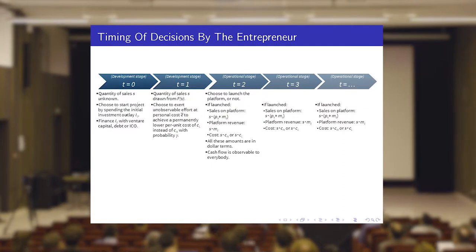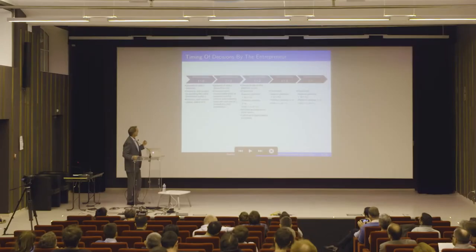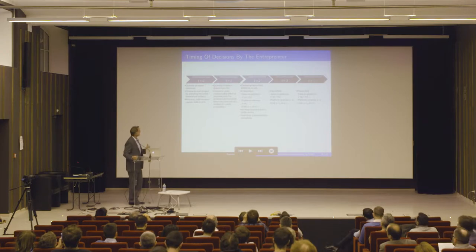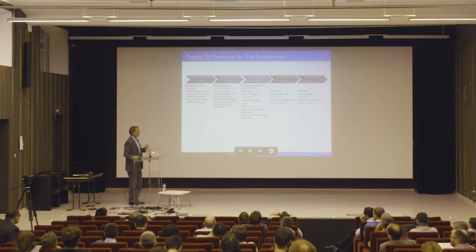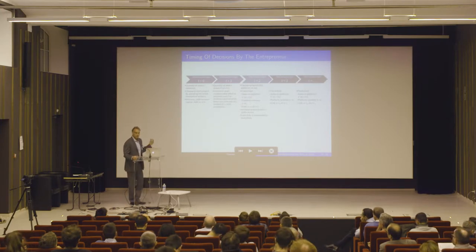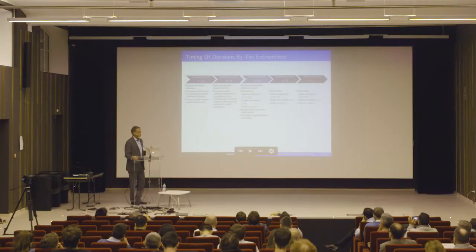Here's how our model works. We have a development stage and an operational stage. In the development stage at T=0, the decision is whether to start the project and which form of financing to use — venture capital, debt, or ICO. At that point, platform sales are unknown. At T=1, those sales are realized, and the entrepreneur decides whether to undertake some costly effort which will result in either a lower-cost platform (C_L) or a higher-cost platform (C_H) — this is probabilistic. At T=2, you see whether effort was successful and decide whether to go ahead with the platform.